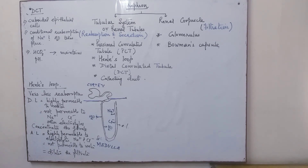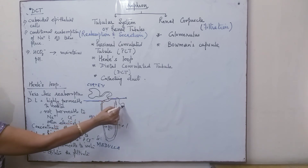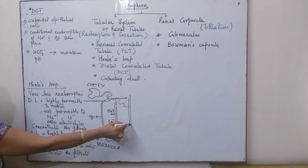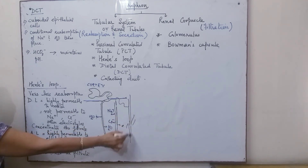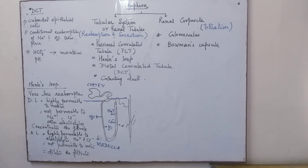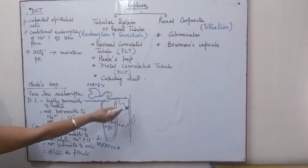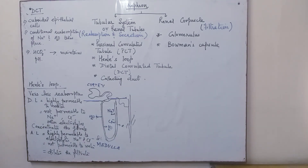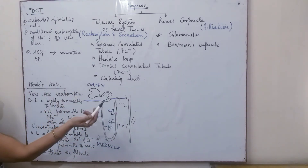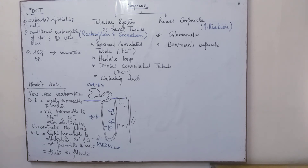The last part of this system is the collecting ducts. All the DCT leads to the collecting tubular system, which finally leads to the ureter. These collecting ducts are very long and extend from the cortex region to the inner parts of the medulla. The collecting tubules reach the renal pelvis area, and from the renal pelvis — which functions as a funnel — it leads to the ureters, leaving the kidney from there.